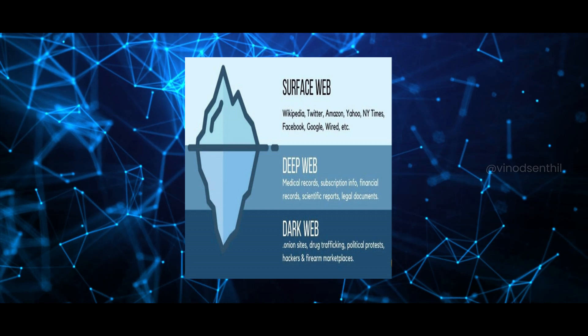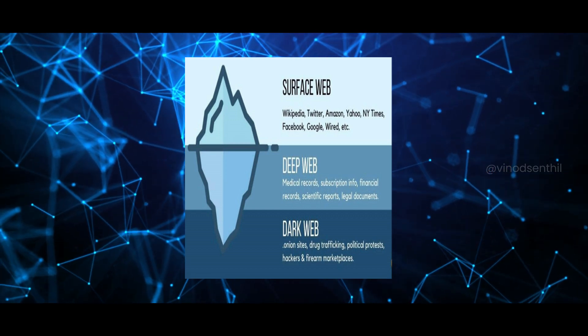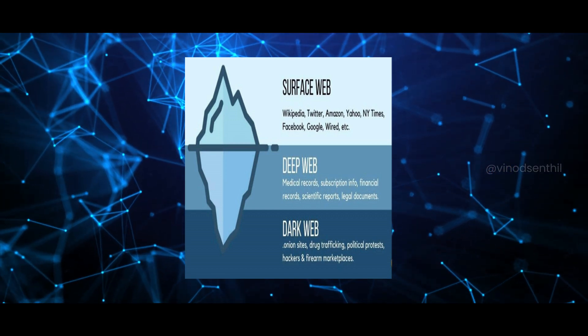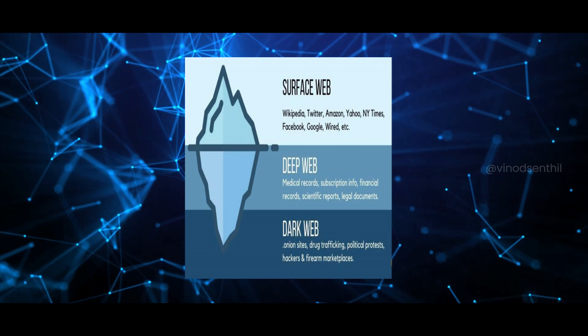There are majorly three types of web. The first layer is called the surface web, the second layer is the deep web, and the third layer is called the dark web. Right now our focus is going to be around the dark web.